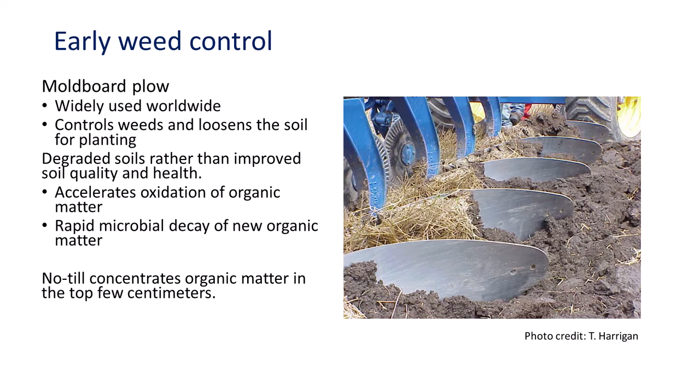Close contact between crop residues, soil microorganisms, moisture, and oxygen stimulates rapid decay that quickly consumes new organic matter. Conservation tillage, especially no-till, concentrates organic matter in the top few centimeters of the soil, improving water infiltration, reducing crusting and erosion, and making nutrients available where the roots are most numerous.